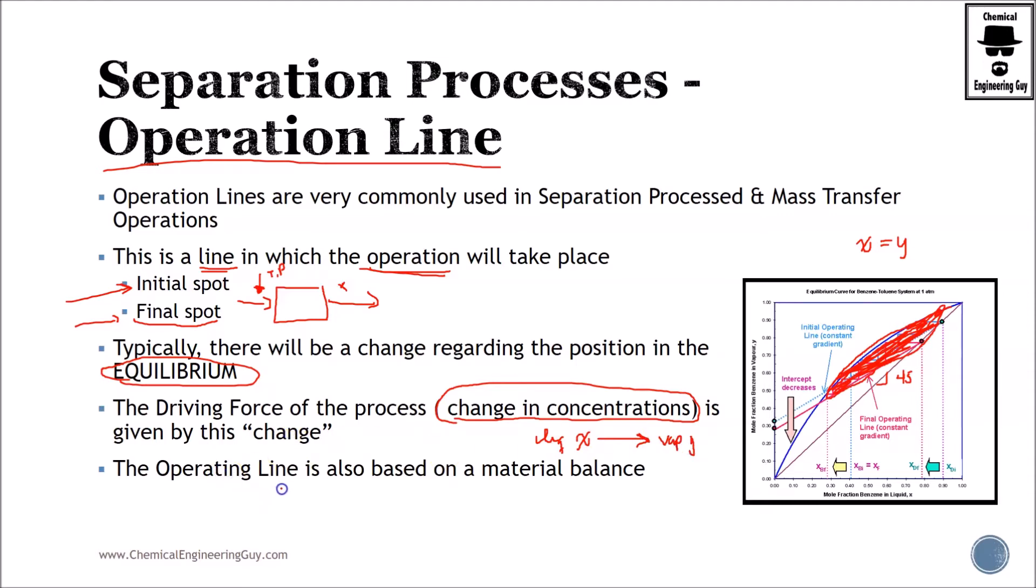The operating line is also based on the material balance because you're going to have the compositions in the initial state and in the final state. Sometimes with the material balance alone you can solve it.